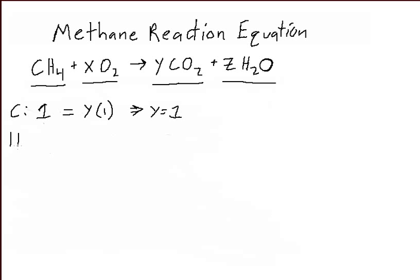Next we're going to look at hydrogen, and we see we have 4 hydrogen from CH4 on the left hand side, and that's equal to Z times 2, the number of hydrogen on the right hand side, and we can see that therefore Z is equal to 2.